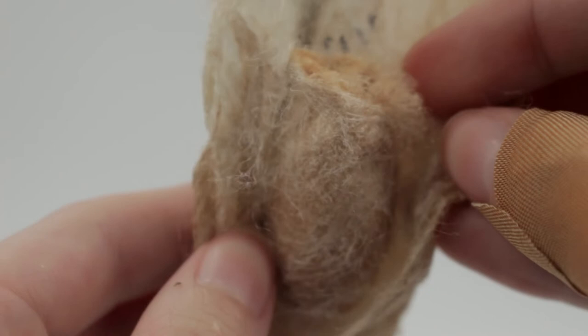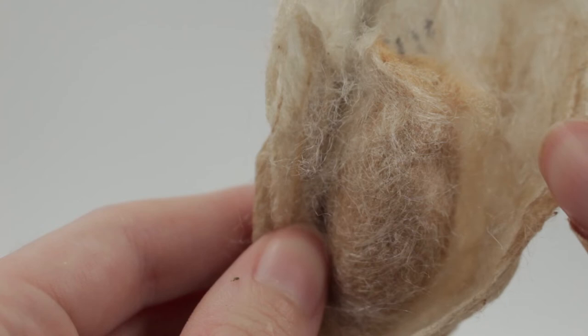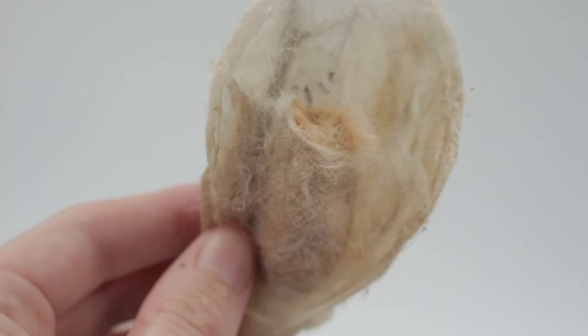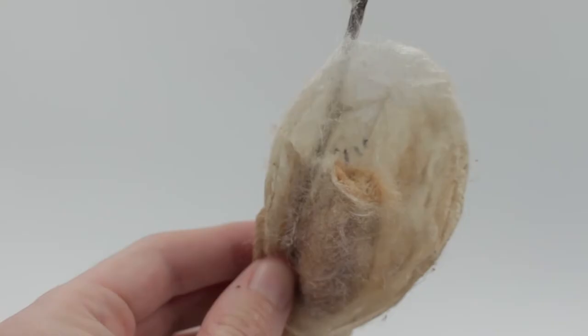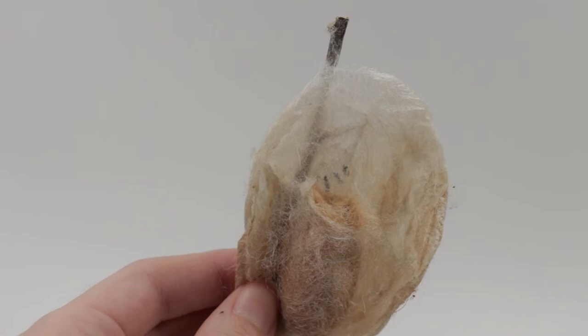Now, you can use your fingers to rip the rest of this open, but I find that a little bit trickier because the inner wall of the cocoon is much thicker. So I like to use a pair of scissors here and just be very careful when using them because you don't want to poke the insect inside.